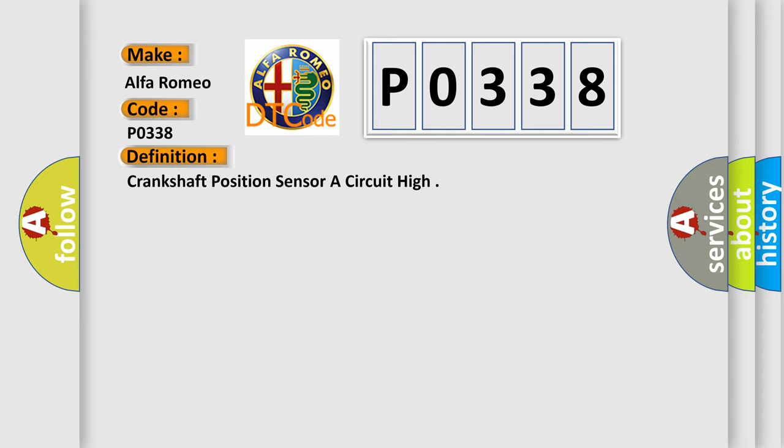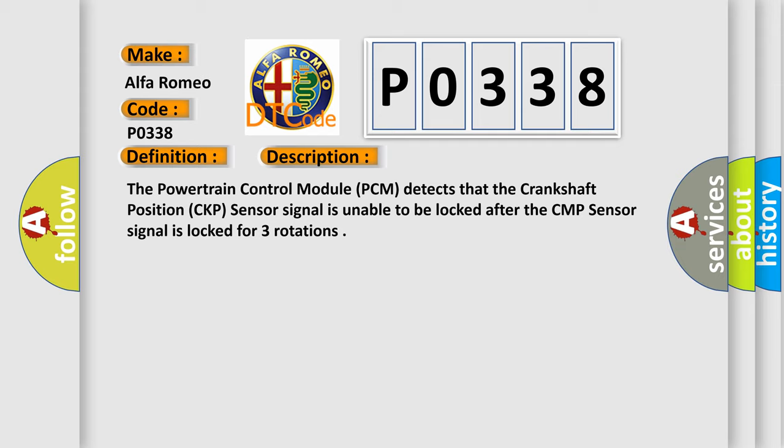Crankshaft Position Sensor A Circuit High. And now this is a short description of this DTC code. The powertrain control module PCM detects that the crankshaft position CKP sensor signal is unable to be locked after the CMP sensor signal is locked for three rotations.